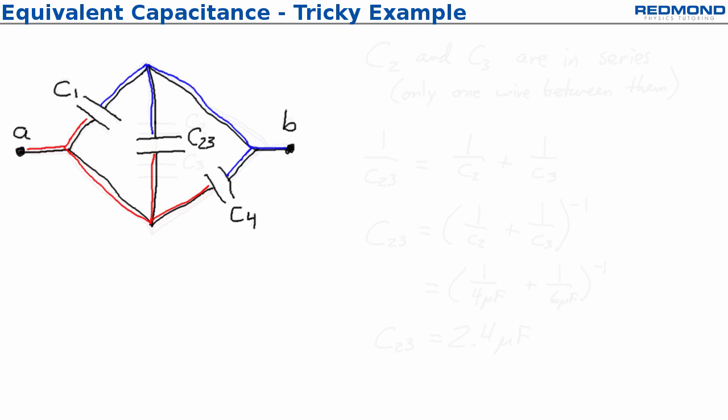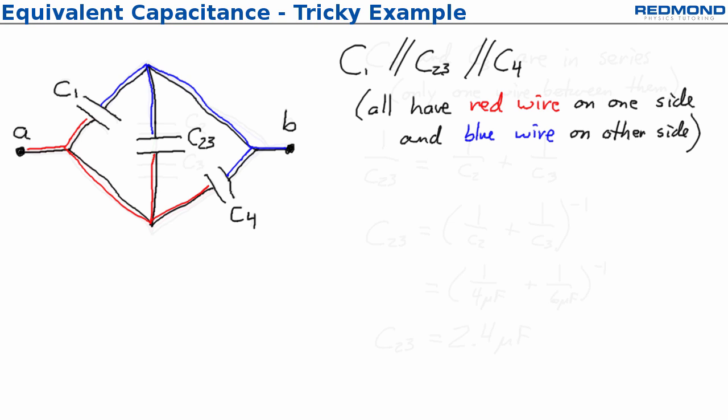Again using the colors, you might be able to see this already without using the colors but the colors really help just make it foolproof. C1 is parallel to C2,3 and it's also, both of those are also parallel to C4 and I know that they're parallel because all three of these elements have a red wire on one side and a blue wire on the other side. They share the same two wires.